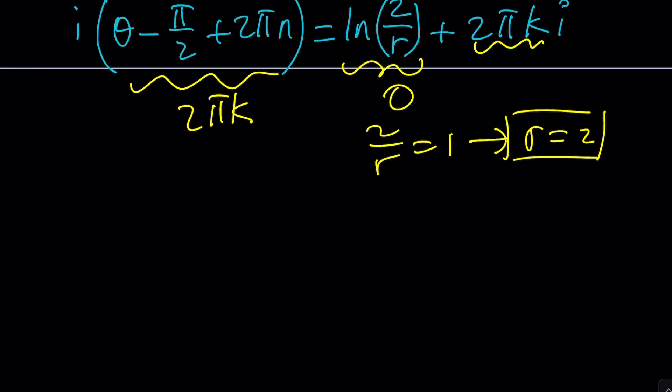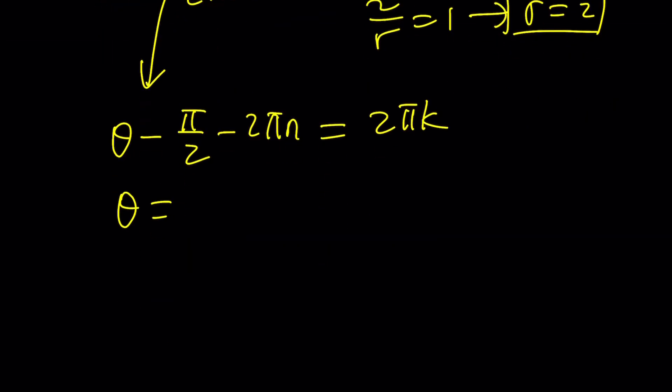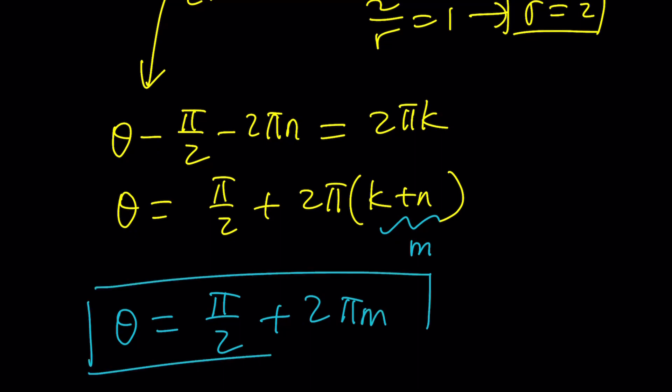But let's go ahead and take a look at this equation. So let's go ahead and set theta minus pi over 2 minus 2 pi n equal to 2 pi k. I want to isolate theta. That's going to be pi over 2 plus 2 pi times k plus n. But k is an integer, n is an integer. So k plus n is also an integer. Let's call it m. And we're going to get theta equals pi over 2 plus 2 pi m from here. And as you know, r is equal to 2.